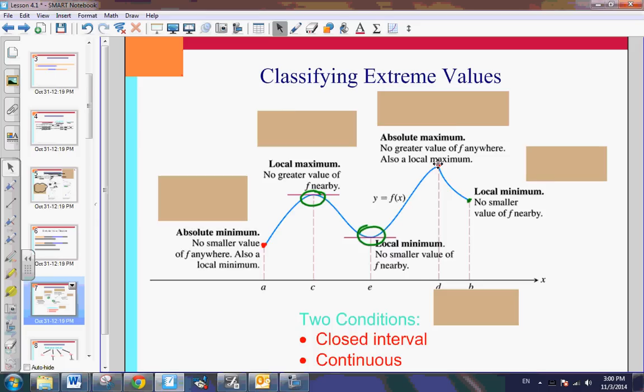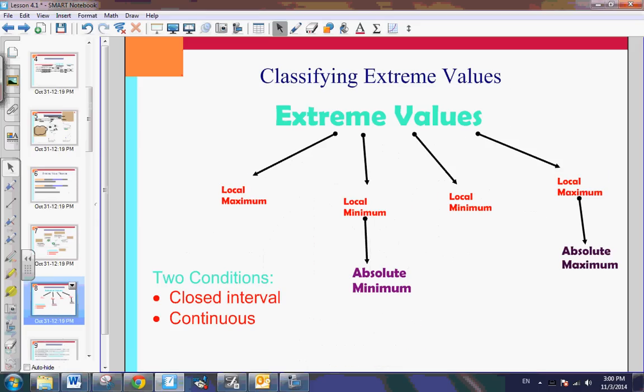A way that I like to think of this is kind of like a chart like this. We have extreme values. And if I were to classify them, I could have a variety. I could have a local maximum. I could have a local minimum. I could also have another local minimum and another local maximum. Right? But are any of these local minimums or local maximums absolutes? Well, of course, especially if it's continuous and closed.